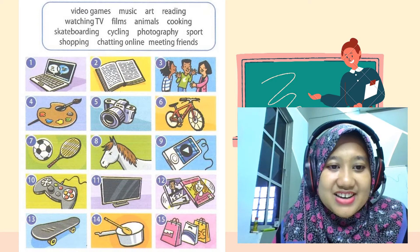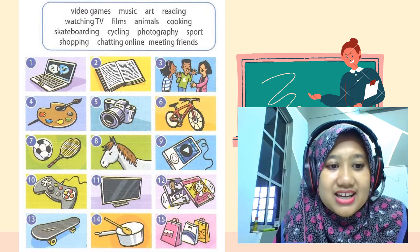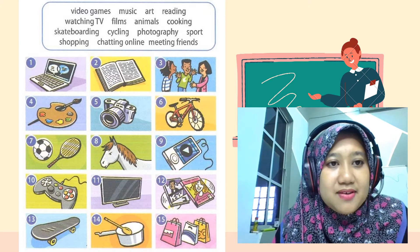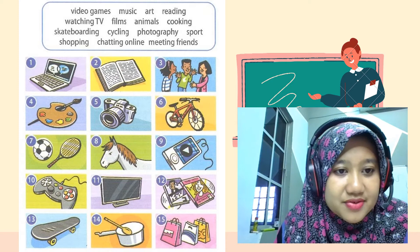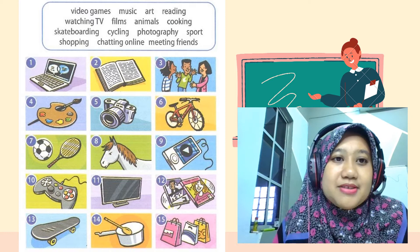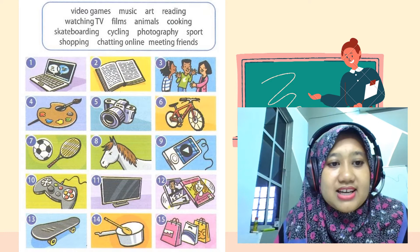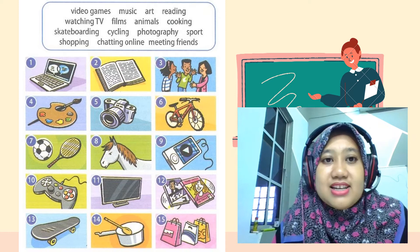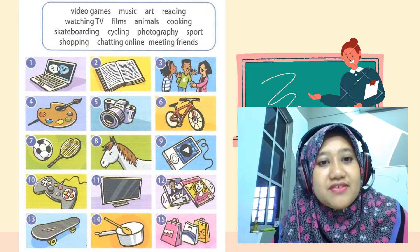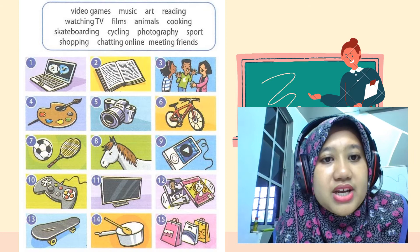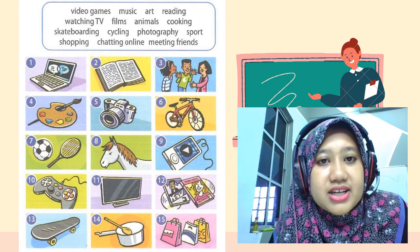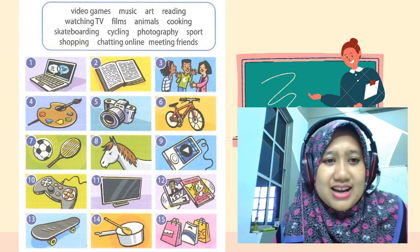And then animals — number eight. Cooking — the next word is cooking, number 14. And then skateboarding — which one is related to skateboarding? Number 13. Cycling — number six, you cycle on a bicycle. And then photography — number five, you can see the camera here. Sports — number seven, you have a football here, so this is related to sports.